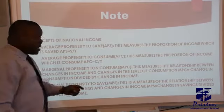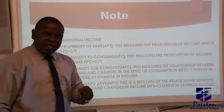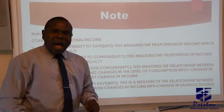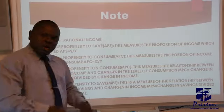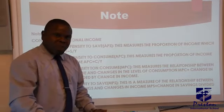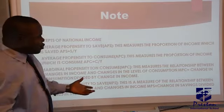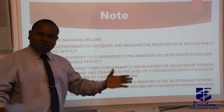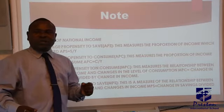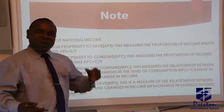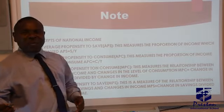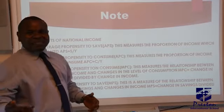Now we are looking at APC, which is average propensity to consume — what is the proportion of your income that you want to consume? You have two things to do with your income: it is either you consume or you save. If you go for savings, then you are not consuming. If you go for consumption, then you are not saving.